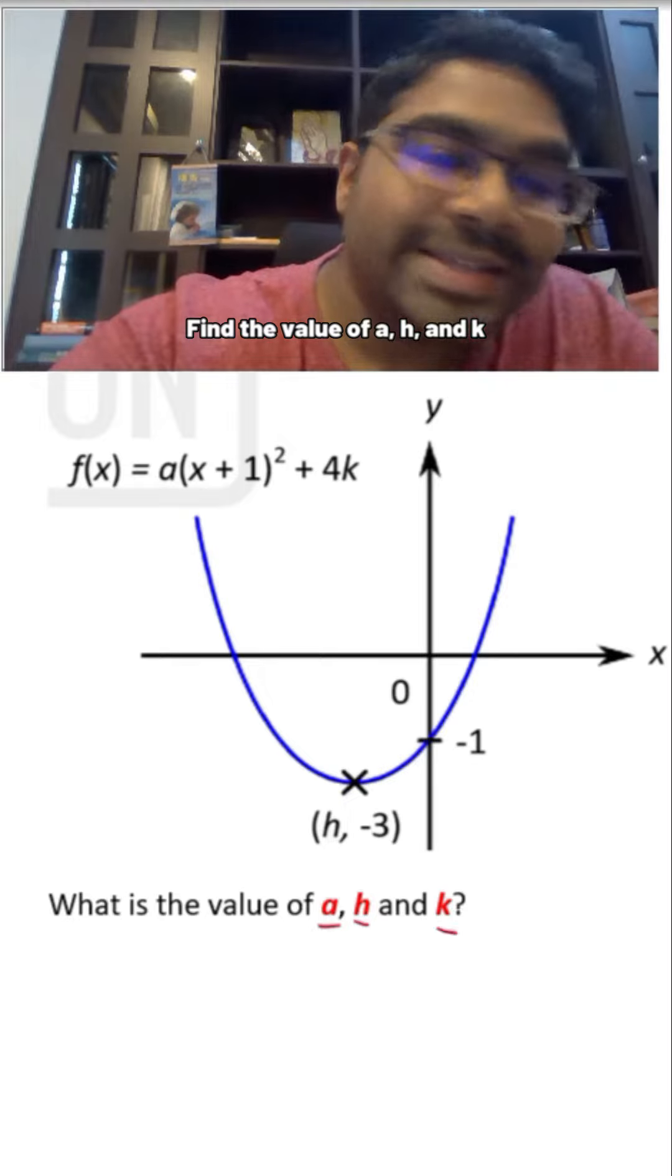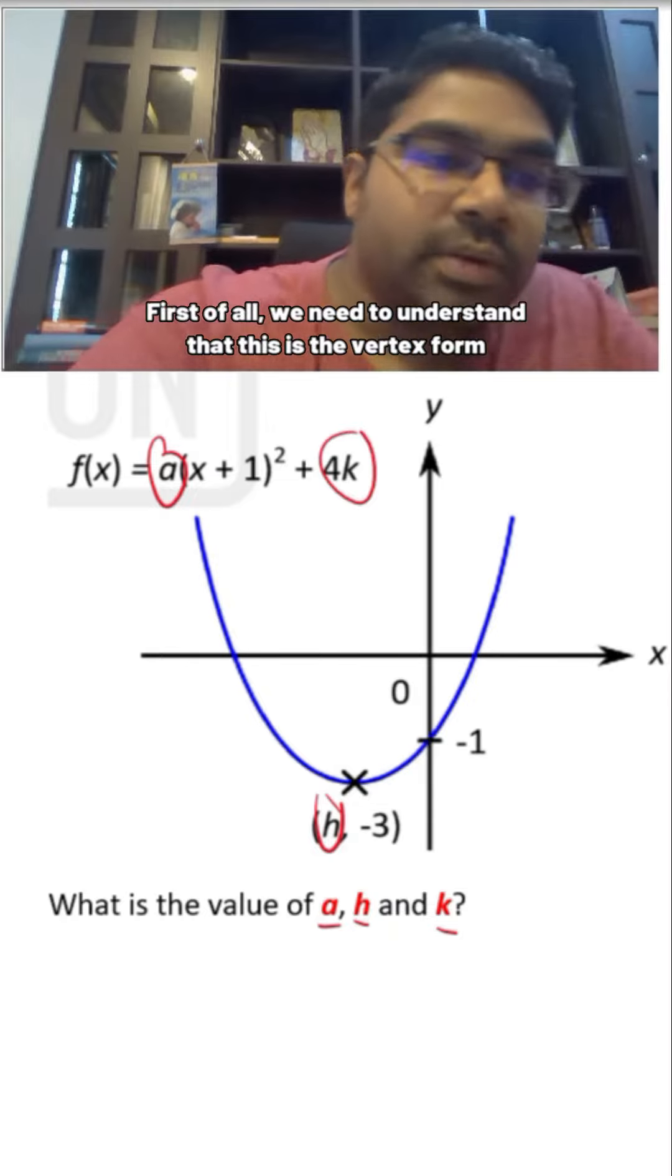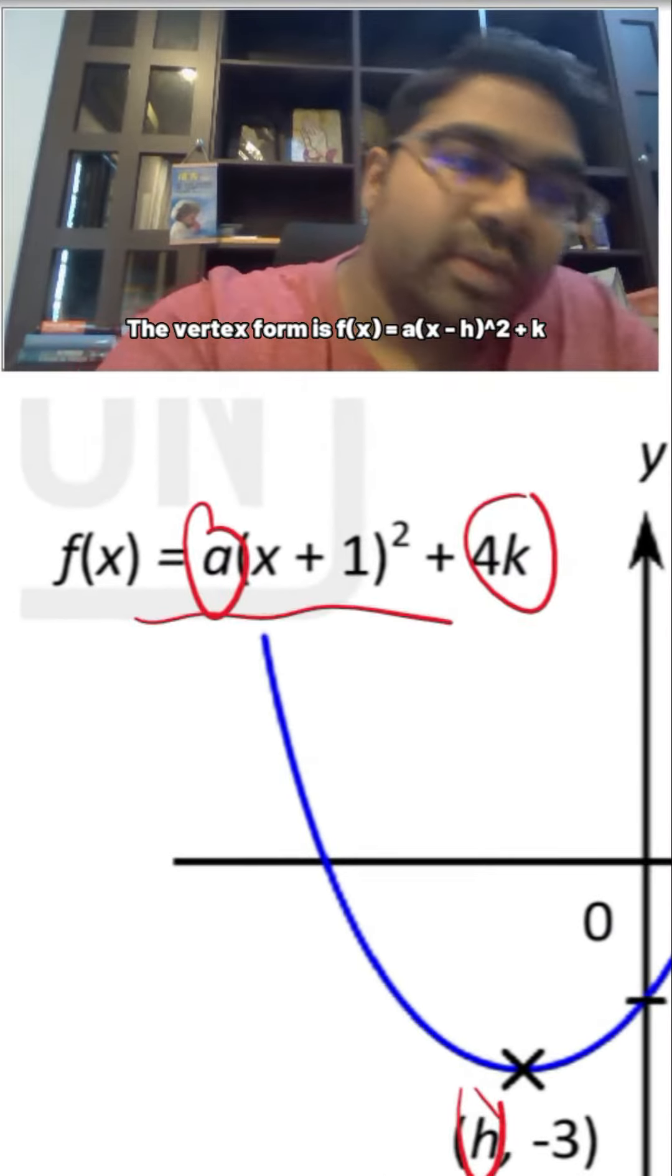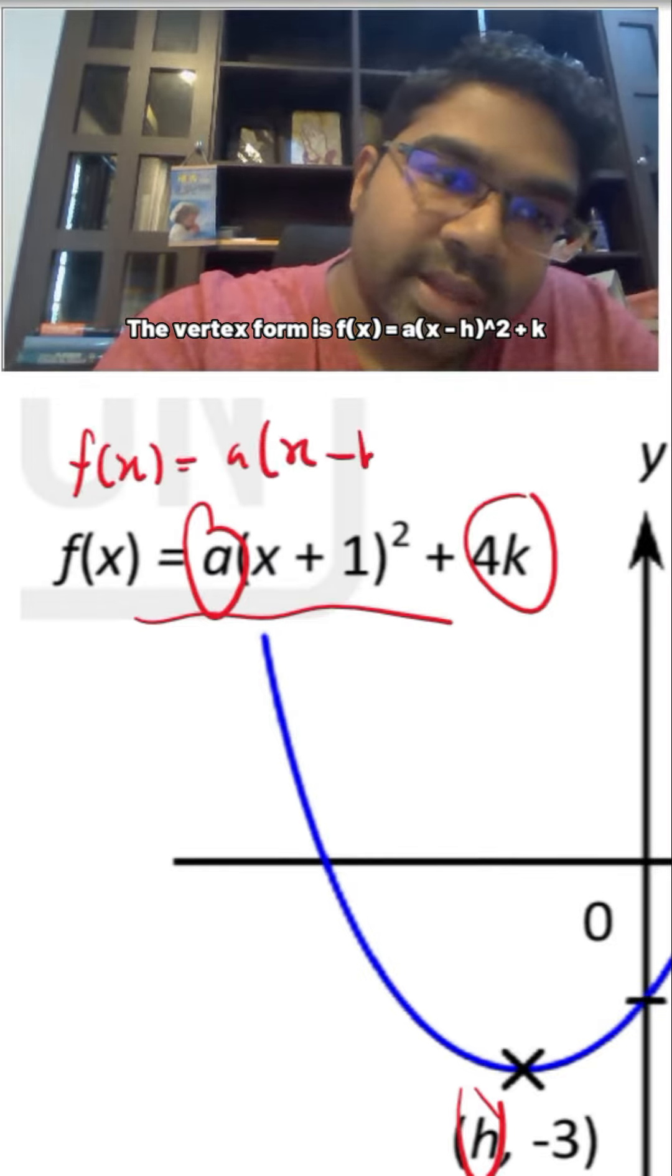Find the value of a, h, and k. First of all, we need to understand that this is the vertex form. The vertex form is f(x) equals a(x minus h) squared plus k.